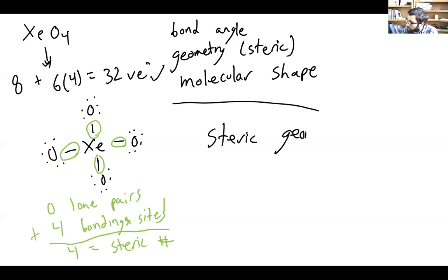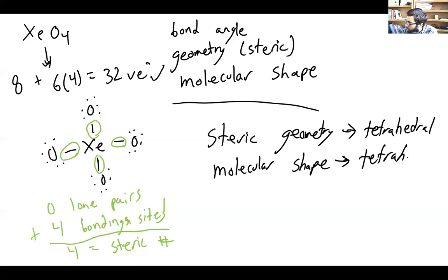From that then we can know what our steric geometry is, and that's going to be tetrahedral. You need to know this—that if you have four objects and you try to put them in three-dimensional space as far apart as possible, they will make a tetrahedron. From that you can then get the molecular shape, and since there's no lone pairs here, the molecular shape is the same as the steric geometry, so the molecular shape is also tetrahedral.